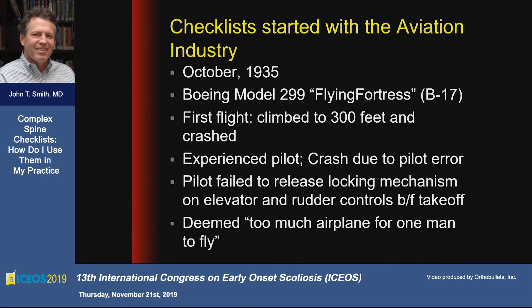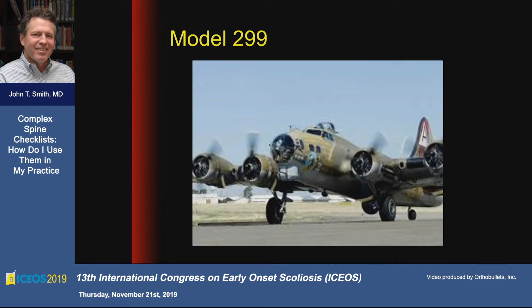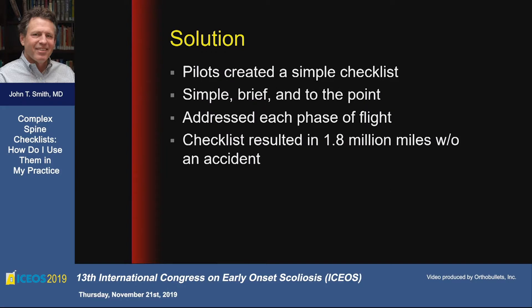The conclusion was this was just too much airplane for one man to fly. This is the Model 299, or the B-17 — an incredible plane. The pilots decided to address this by making a very simple checklist, which was not common in the aviation industry at the time. It was simple, brief, and to the point: you touch this, you unlock that, you turn this knob — addressing each phase of flight. In the end, this airplane flew millions of miles accident-free once they implemented this checklist system.